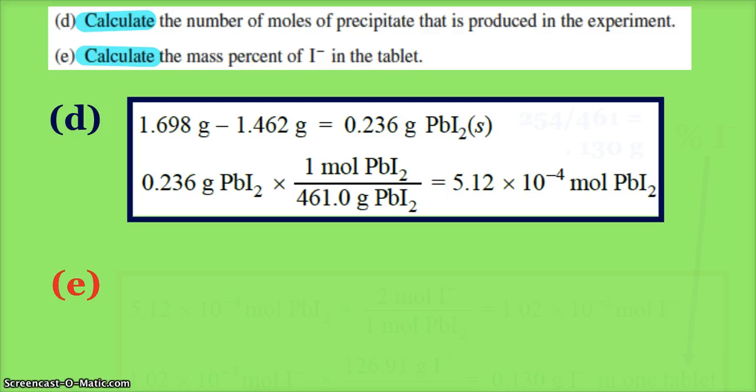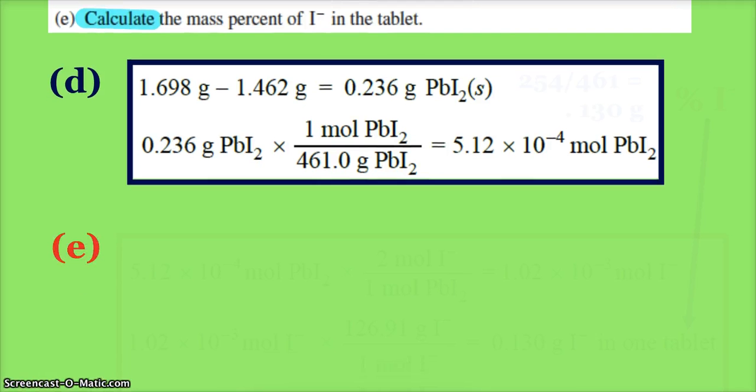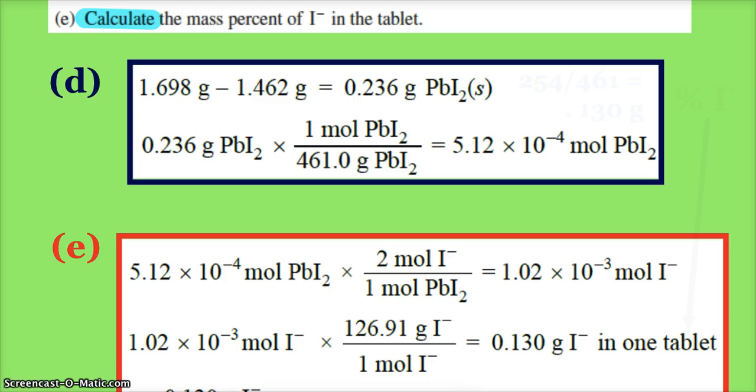Calculate the mass percent of iodide. Well, there's a couple ways to do this. First, we can just look at the formula lead(II) iodide, and so in my moles of PbI₂ there are 2 moles of iodide ions. So I switch that to moles, I use the molar mass, and it gives me the grams of iodide in one tablet: 0.130.